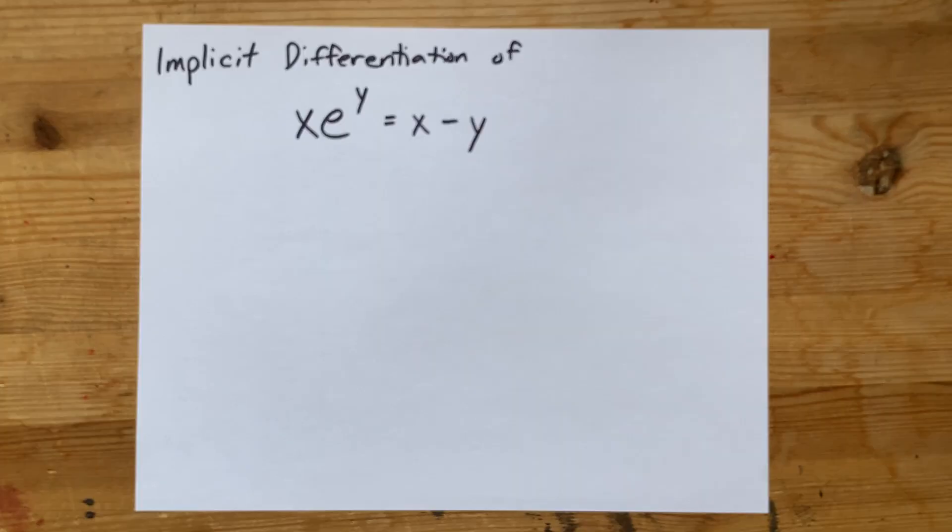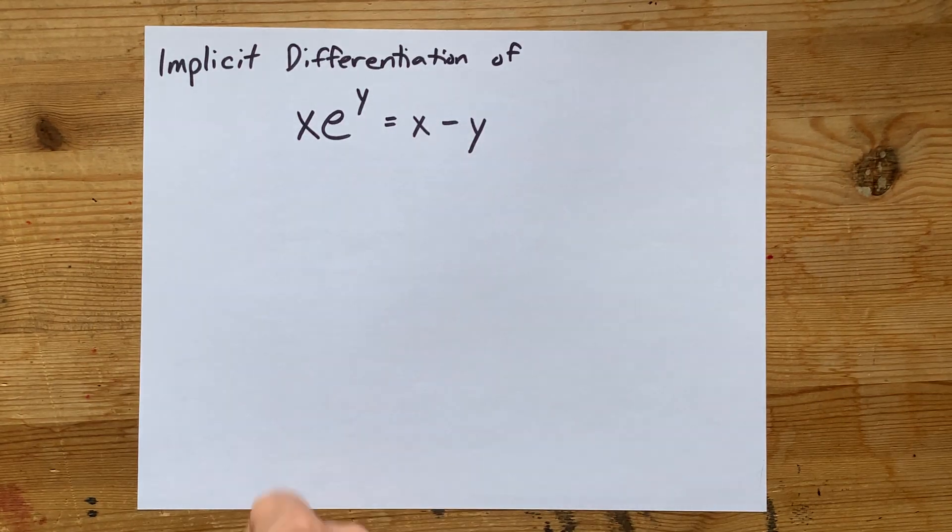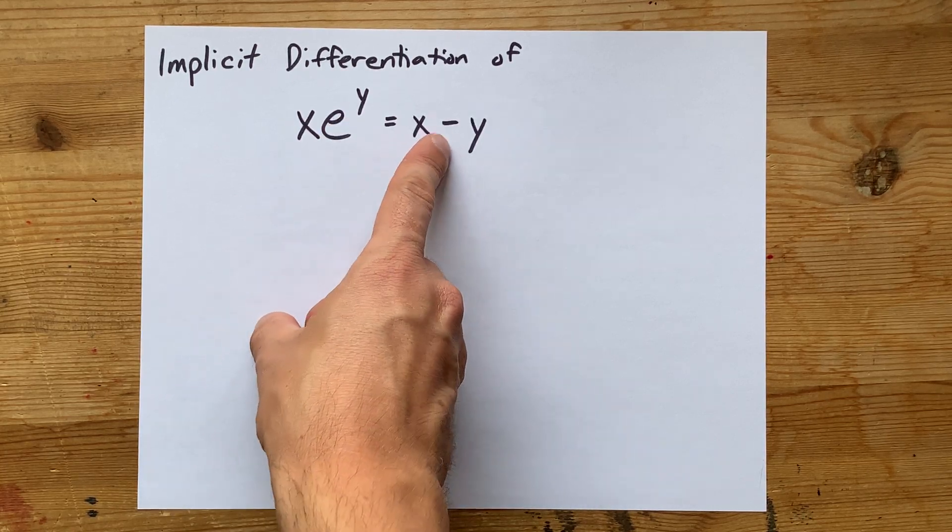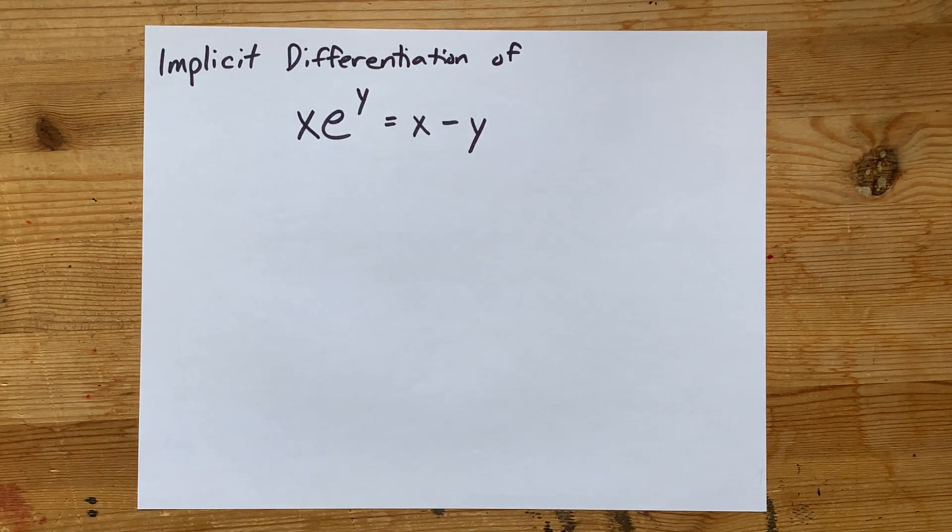Let's do implicit differentiation on this equation that I found online. x times e to the power of y equals x minus y.